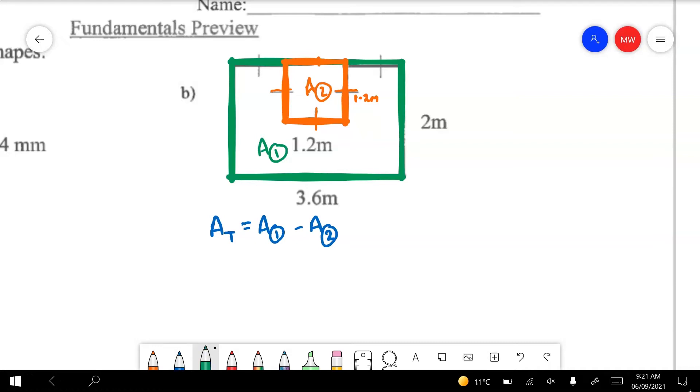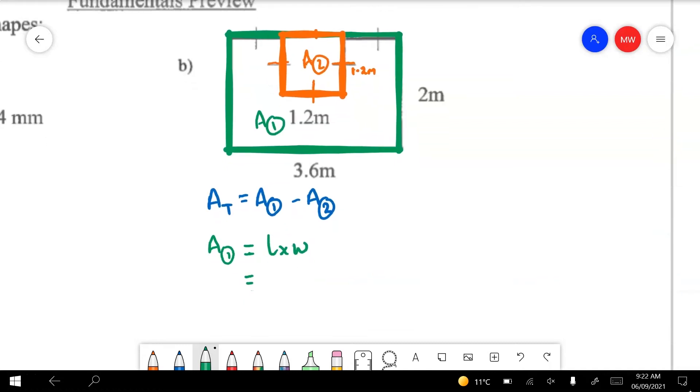I can see these little dashes here, these mean that everything that's got a dash in it is going to be the same length, so this side is going to be 1.2. I've got a big rectangle here and I've got a small square hidden in here. I'm going to give them names. I'm going to call the green one area 1, and the orange one area 2, and I'm going to generate my own little formula. The area total of this shape is going to be area 1 minus area 2.